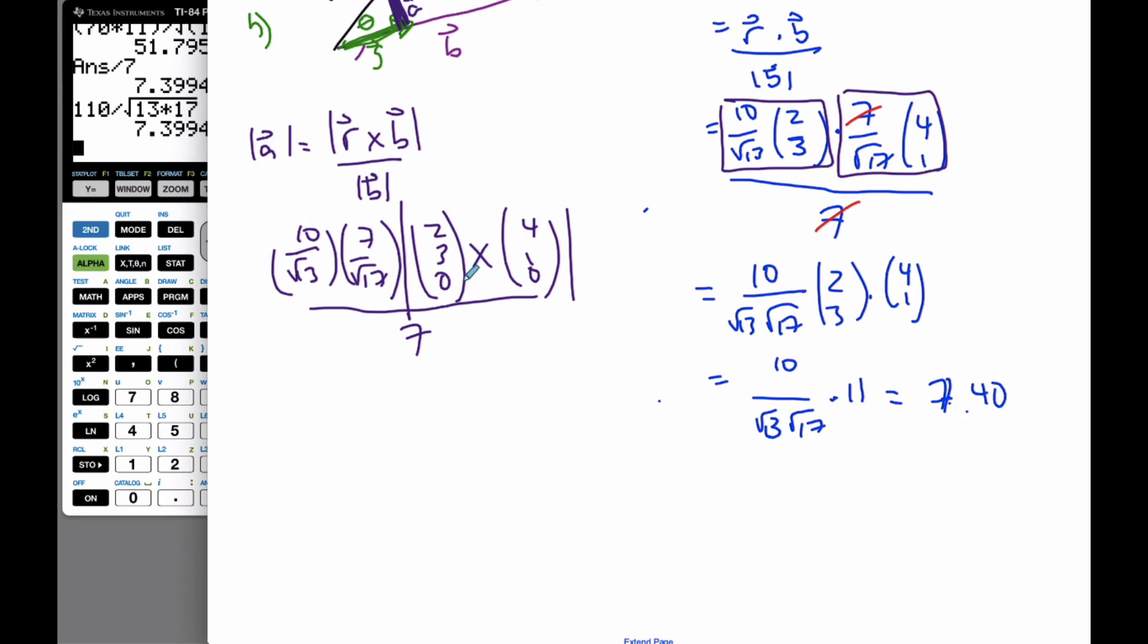Doing the cross product now, well, let me just simplify here a little bit. That 7 will go away. And so I have 10 over square root of 13, square root of 17. And this vector, what I'm going to get, I'm going to do the x values. My i values are going to go 0 minus 0, I get 0. My j values are going to be 0 minus 0, I get 0. And then finally my k values are going to get 2 minus 12. 2 minus 12 is negative 10.